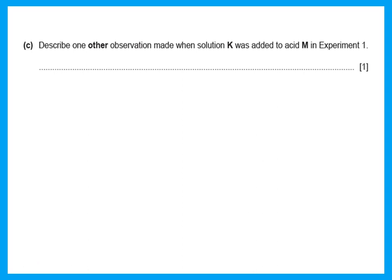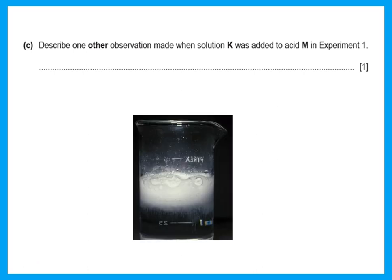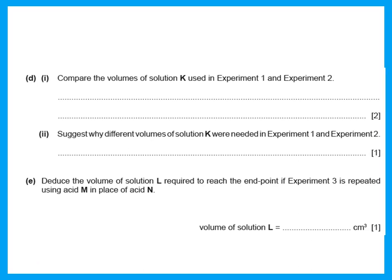Describe one other observation made when solution K was added to the acid. Solution K is sodium carbonate — you are adding carbonate to acid. When carbonate is added to acid, you see bubbles of gas, because carbonate reacts with acid to produce carbon dioxide gas.